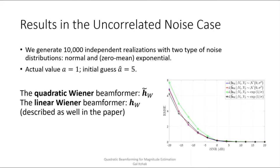So let's take a look at some simulation results in the uncorrelated noise case. We generate 10,000 independent realizations with two types of noise distributions, normal and zero mean exponential. First of all, we observe that for high input SNRs right here, the RMSE converges to zero with both estimators and noise distributions.